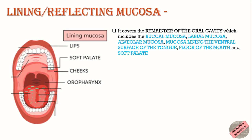Third is lining mucosa, also called reflecting mucosa. It covers the remainder of the oral cavity, which includes the buccal mucosa, labial mucosa, alveolar mucosa, mucosa lining the ventral surface of the tongue, floor of the mouth, and soft palate. Overall, it makes up all the surfaces of the mouth except for the dorsum of the tongue and the masticatory mucosa. It occupies 60 percent of total mucosa.